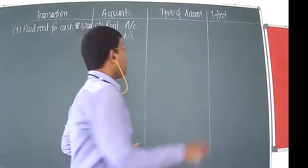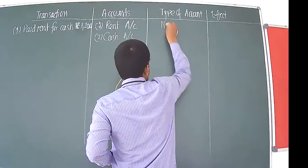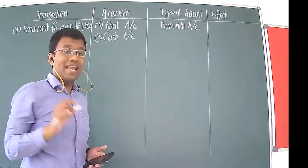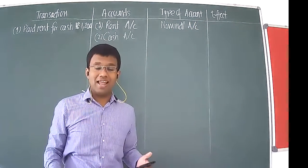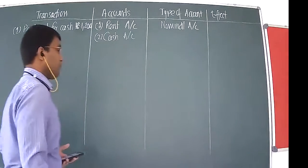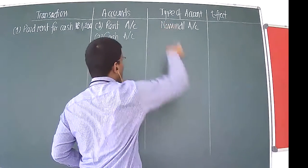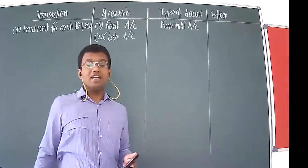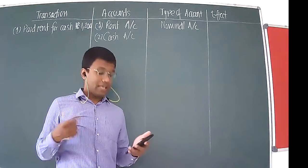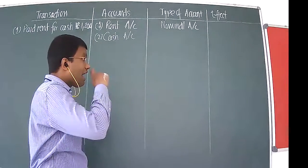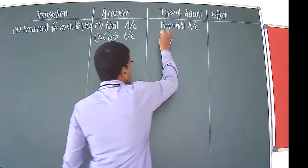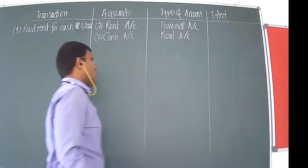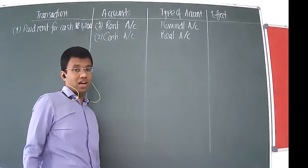Rent account is what type? Rent account is nominal. Why? Because rent is an expense — when you pay rent, that is an expense for you, so rent account is nominal in nature. Then you have cash. Cash represents the physical money you have, and cash is real in nature — so cash is a real account.